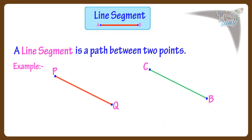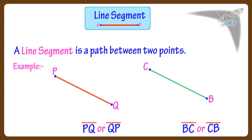Here are some more examples of line segments. This line segment will be written as PQ or QP with a bar above the name — that denotes that it's a line segment. Similarly, this line will be represented as BC or CB with a bar above, denoting that it's a line segment.